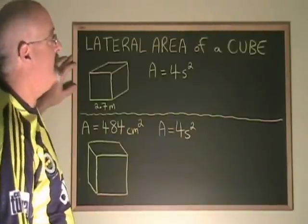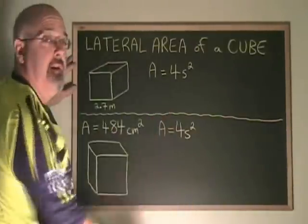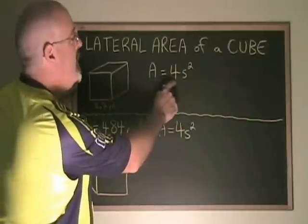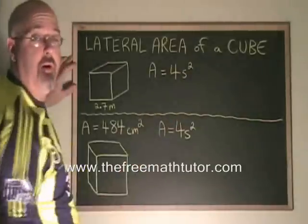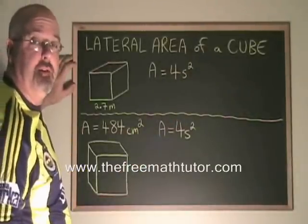The lateral area of a cube is found using this formula. The area is equal to 4 times the length of the side squared. Let's do a couple of examples to try it out.